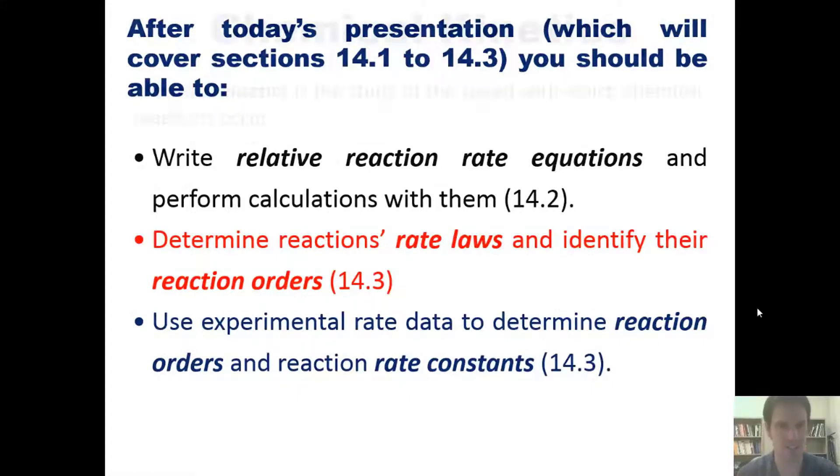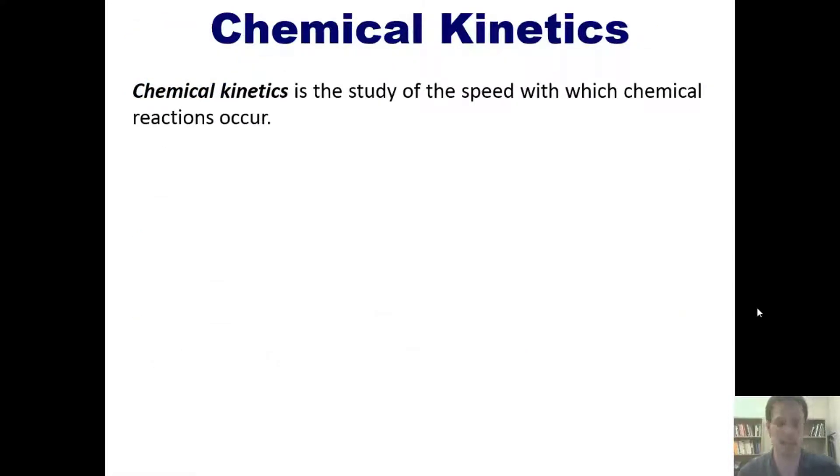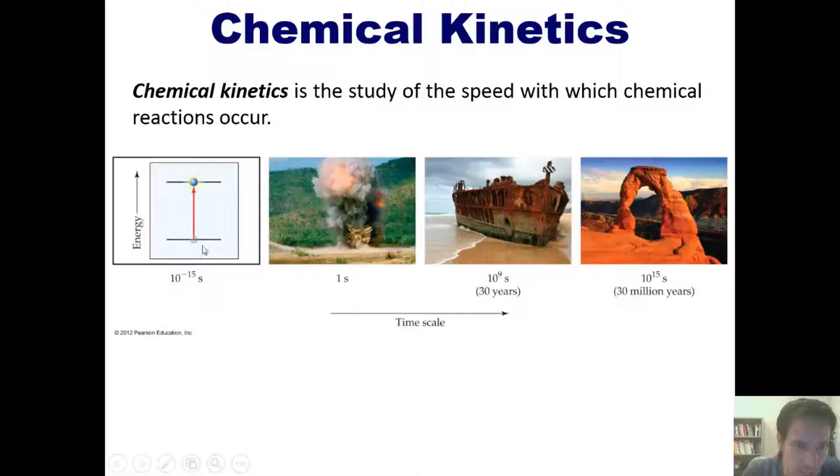That's the lineup. Let's get started. Chemical kinetics really is the study of the speed with which chemical reactions occur. For example, promoting an electron from one orbital energy level to another takes 10 to the negative 15 seconds. Detonating a bunch of dynamite takes one second for that reaction to occur.